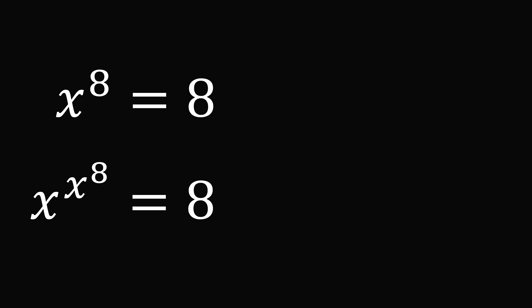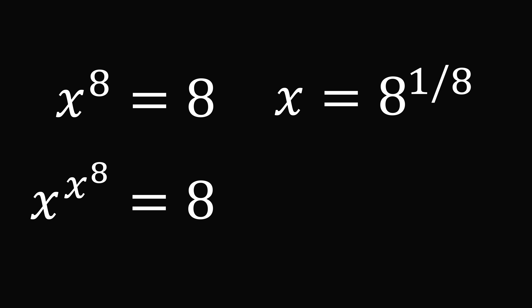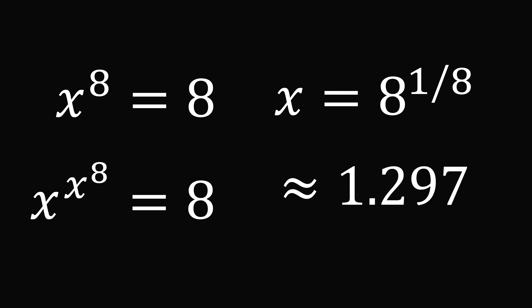To solve x to the power of 8 equals 8, we take both sides to the power of 1 over 8, so we get x equals 8 to the power of 1 over 8, which is approximately equal to 1.297.